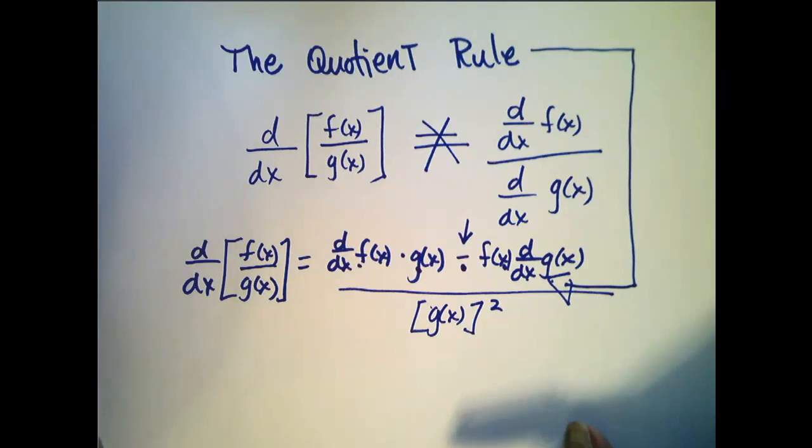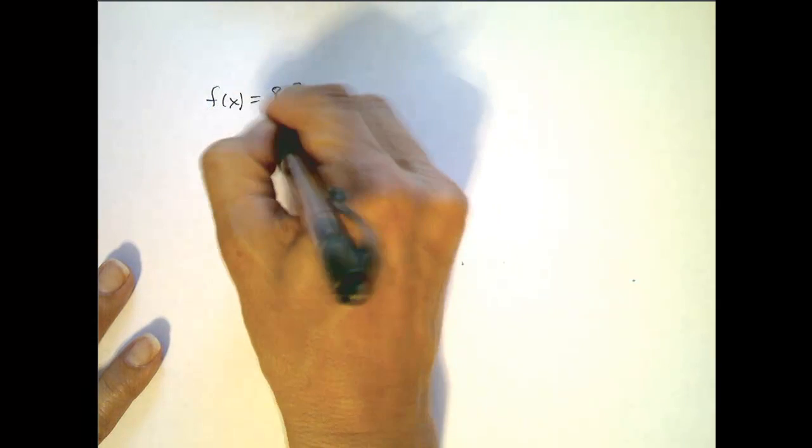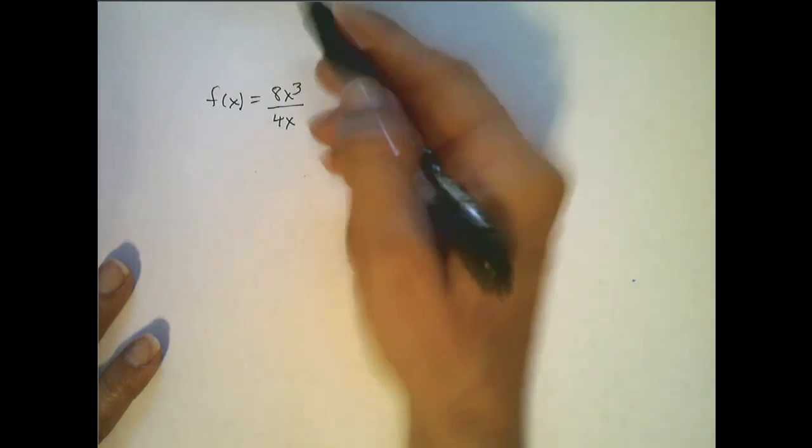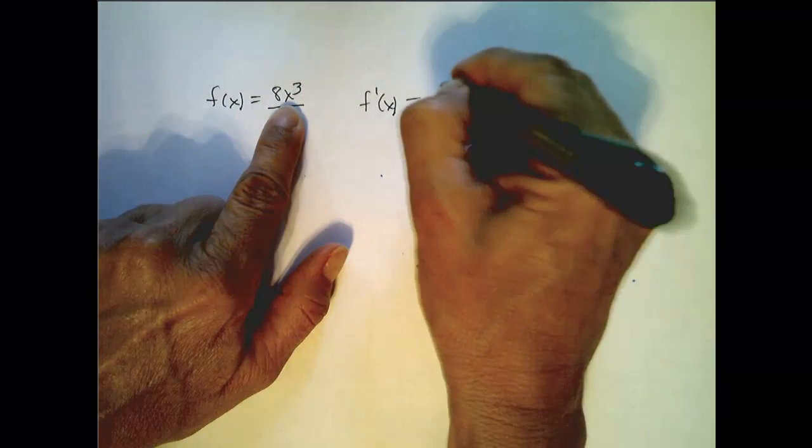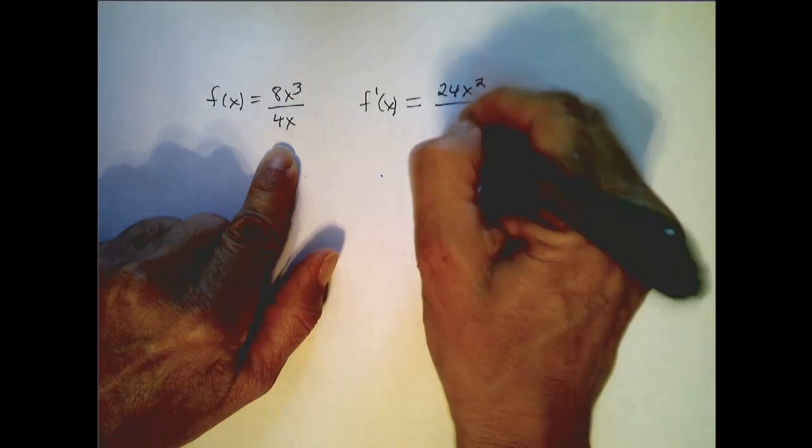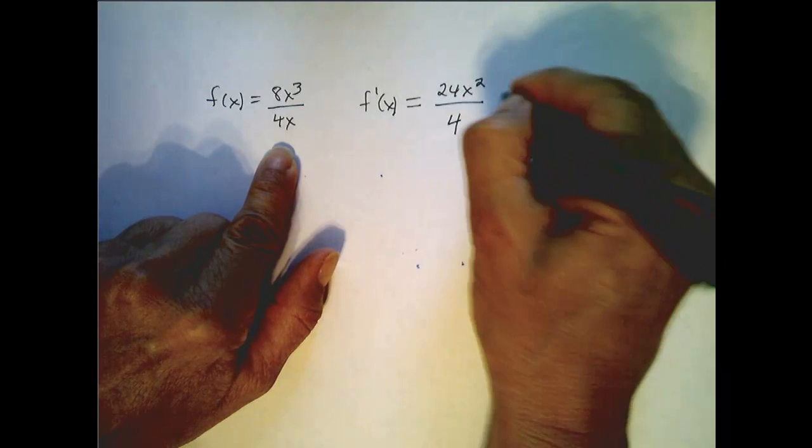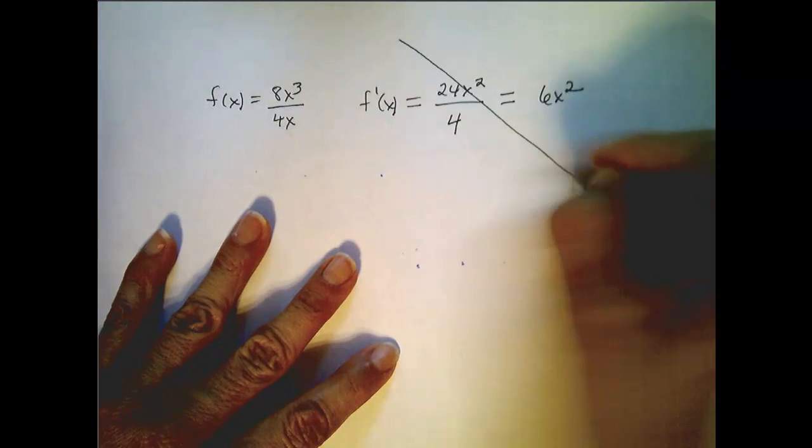Let's look at an example to see why this is not true. Let's start with something very basic: f(x) equals 8x³ over 4x. If we mistakenly believed that its derivative was equal to the derivative of the top over the derivative of the bottom, then we would conclude that this derivative was actually 6x². Bad math.